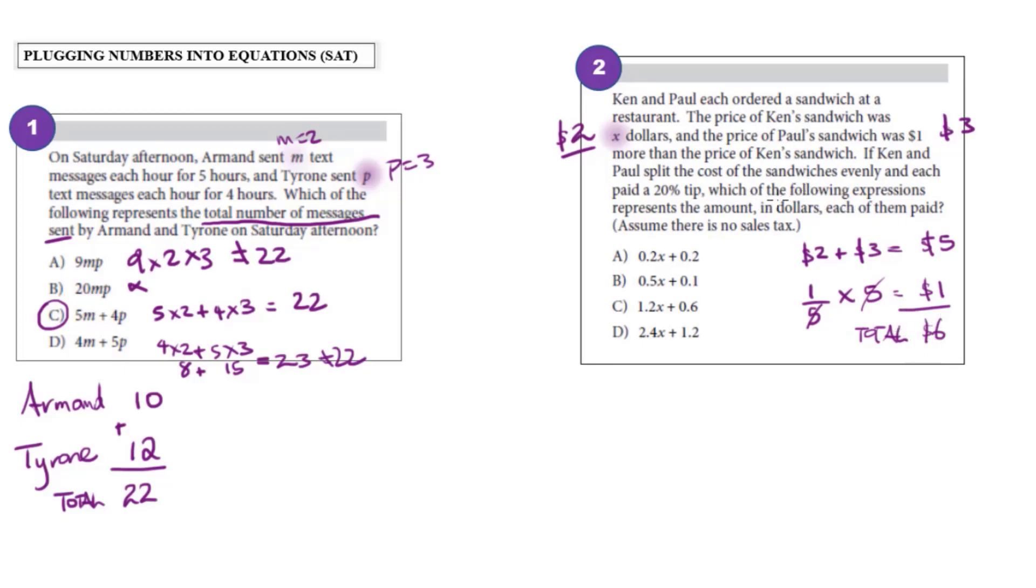Now we want to find which expression represents the amount each of them paid. So if they paid $6 in total, each of them would have paid $3. So basically, we want to figure out which one of these expressions will give us back $3.